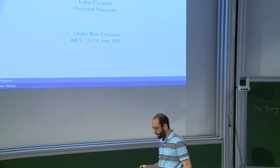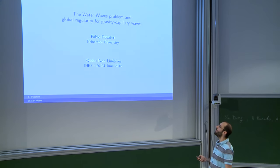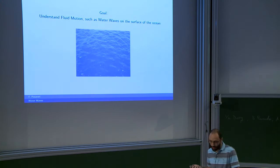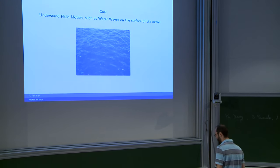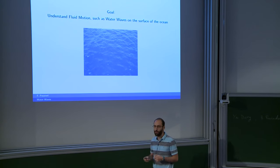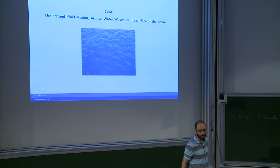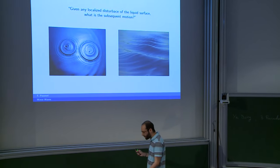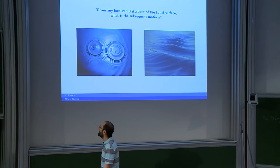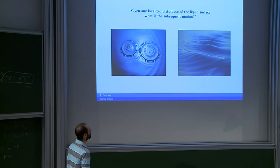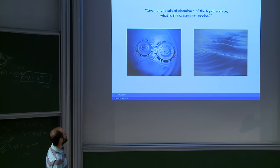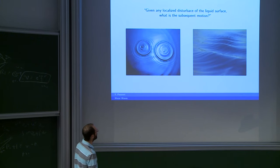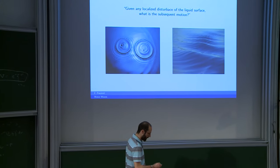Let me give a more general introduction: talk about the models and the results that have been proved recently. The general goal is to understand the fluid motion for a fluid that occupies a region that is moving, evolving with time. The standard example is waves on the surface of the ocean. This is a question posed by Laplace some time ago, where he posed the Cauchy problem for water waves: given any initial disturbance, which is localized, of the liquid surface, what will happen next?